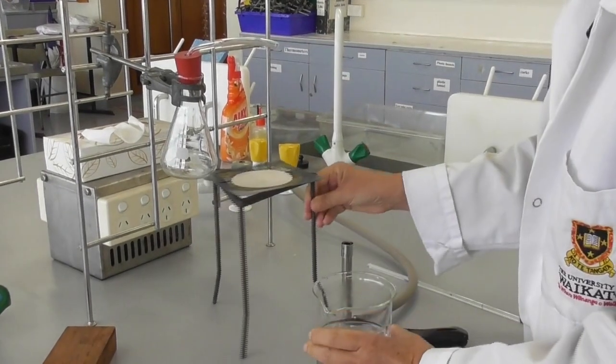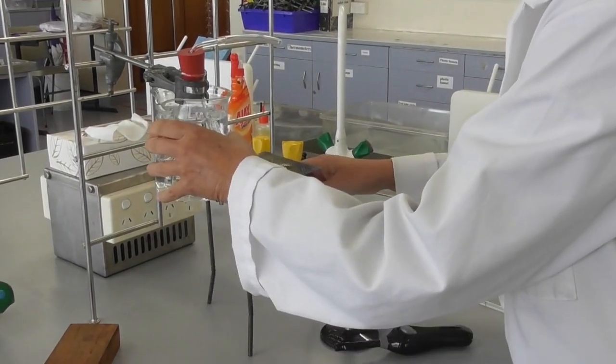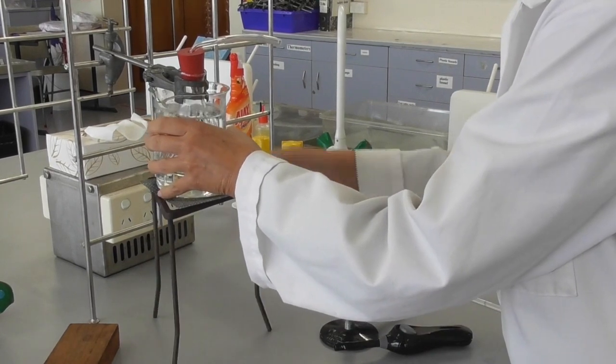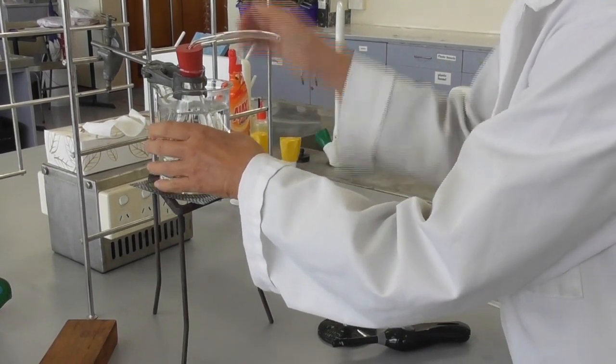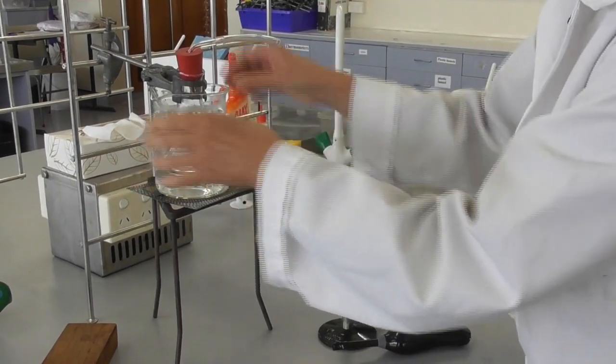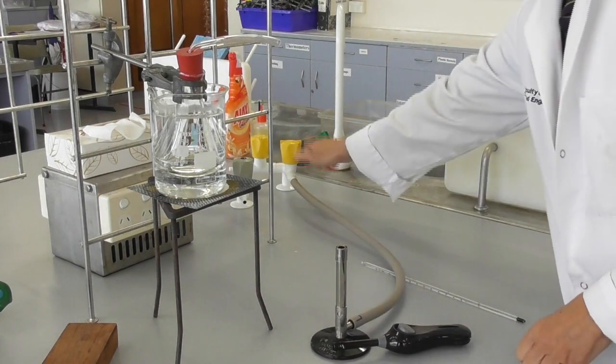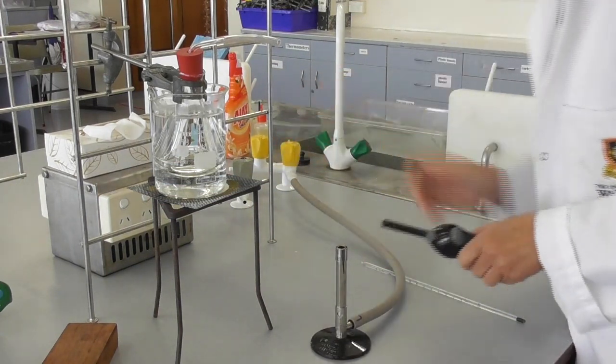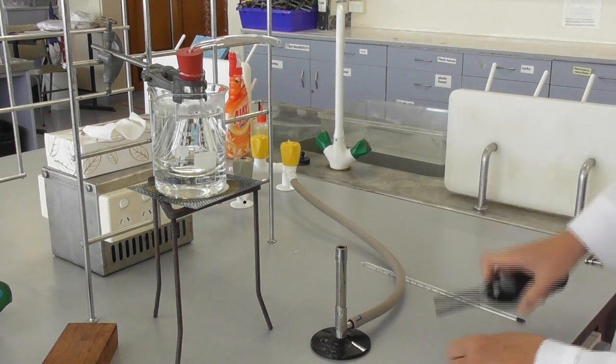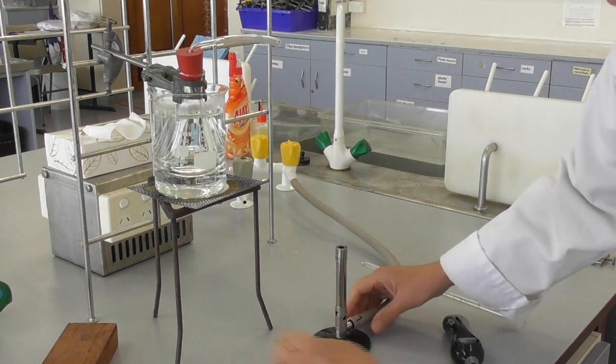Next the flask gets clamped into a 600 ml beaker that is filled with water. We want to make sure that the water covers almost all of the Erlenmeyer flask to ensure that we get the temperature of the water inside the flask as well.